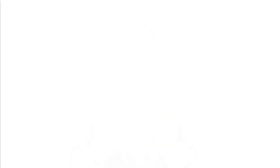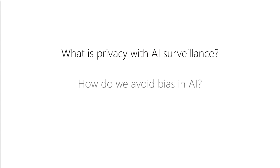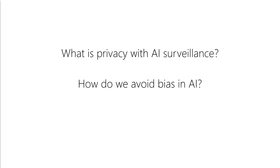For example, what does privacy mean in a world with constant and pervasive AI surveillance? We currently have very little privacy and we're about to get a lot less. How do we avoid bias and discrimination in our AI models? It's easy to create biased AI models that will directly impact the lives of millions of people.